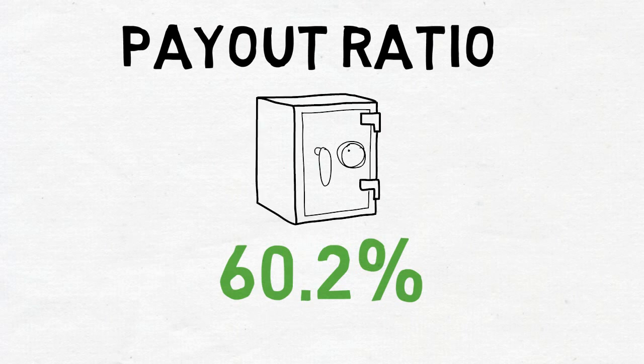The next rule is the payout ratio and you'll be happy to know that GSK has a safe payout ratio of 60.2%. Dividend experiment guidelines limit is 75% so this is well within the limit.